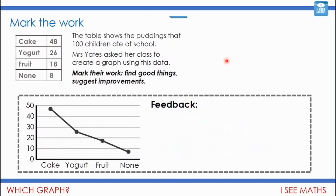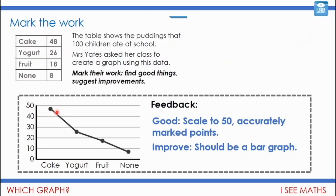What about this next graph? How well has this child done? What can they improve? The scale is just right up to 50 — that's been done really well — and we've got clear groups with points accurately marked on. But this one needs to be a bar graph. The children either had cake or yoghurt; there's no in-between value, so the in-between connections on a line graph don't have any meaning. This one really needs to be a bar graph.